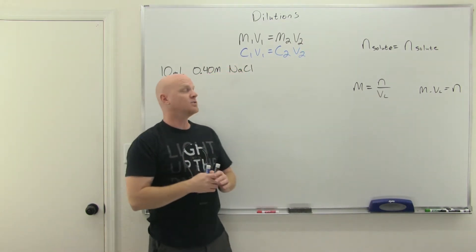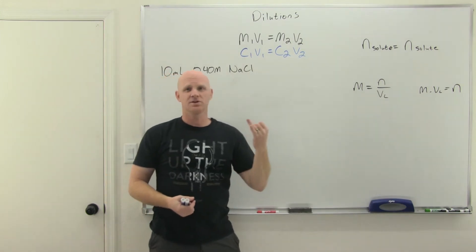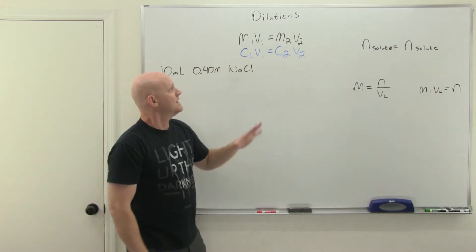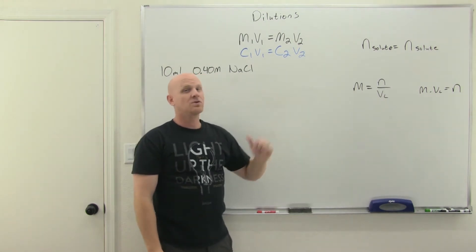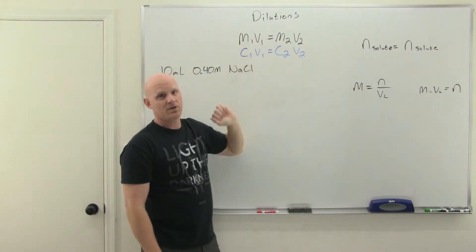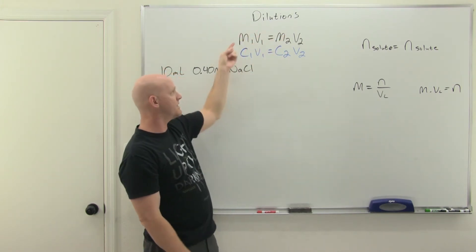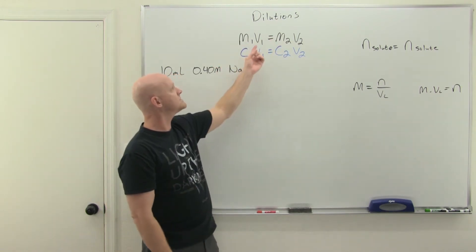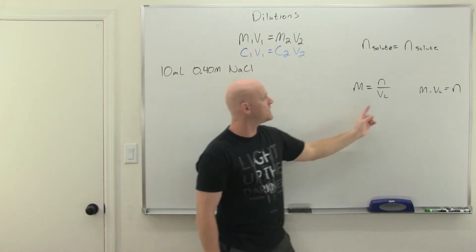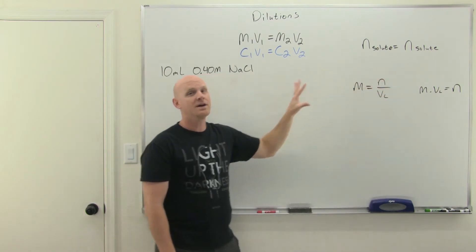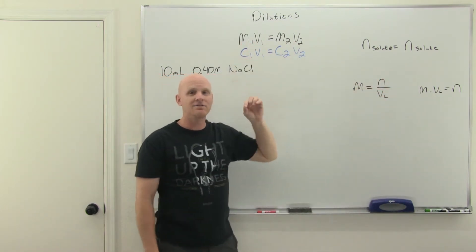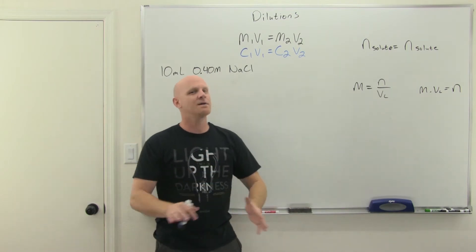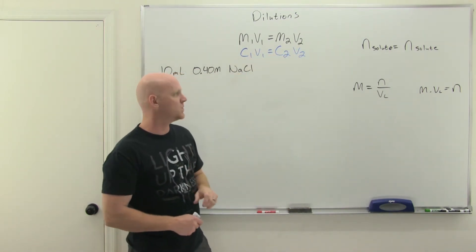You could use mass percents, molality, mole fractions — any unit of concentration. One important thing: you need to use the same units on both sides. If you use molarity on the left, use molarity on the right. Same for volume — if you're using milliliters on the left, use milliliters on the right. As long as you're consistent, the units will cancel and the equation will work.